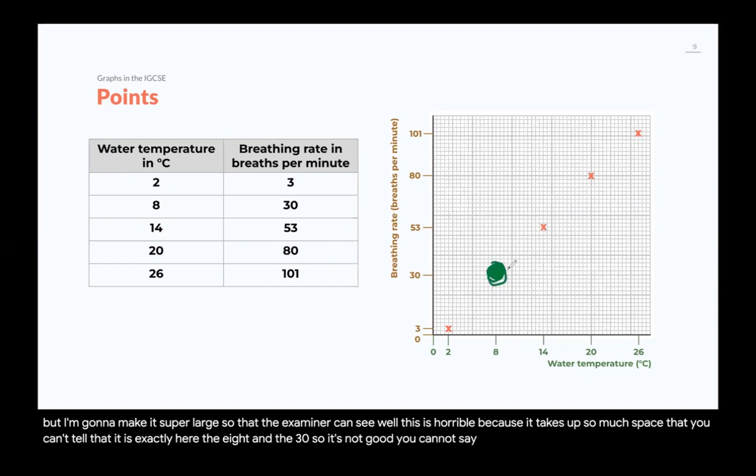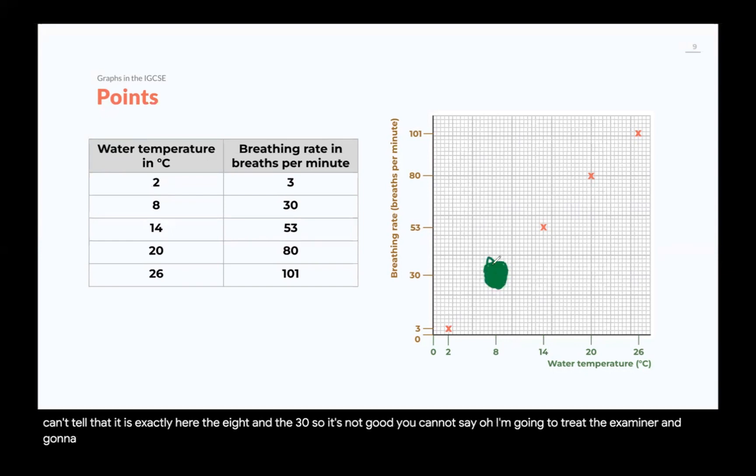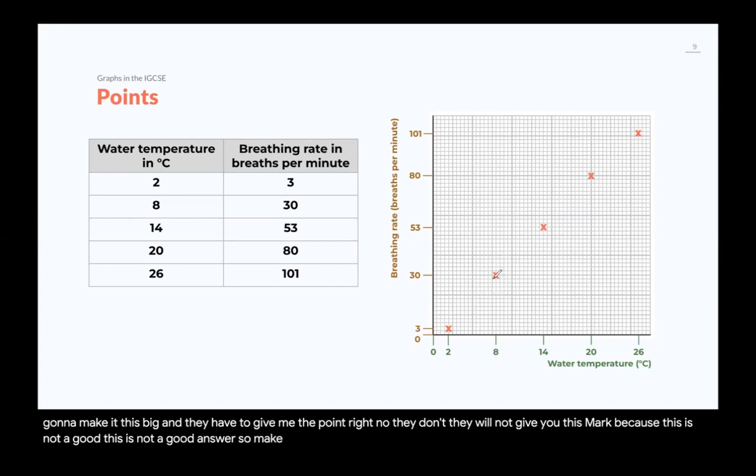You cannot say, I'm going to trick the examiner. I'm going to make it this big, and they have to give me the point, right? No, they don't. They will not give you this mark because this is not a good answer. So, make an X. Make an X, slap this X, and then you have the line.